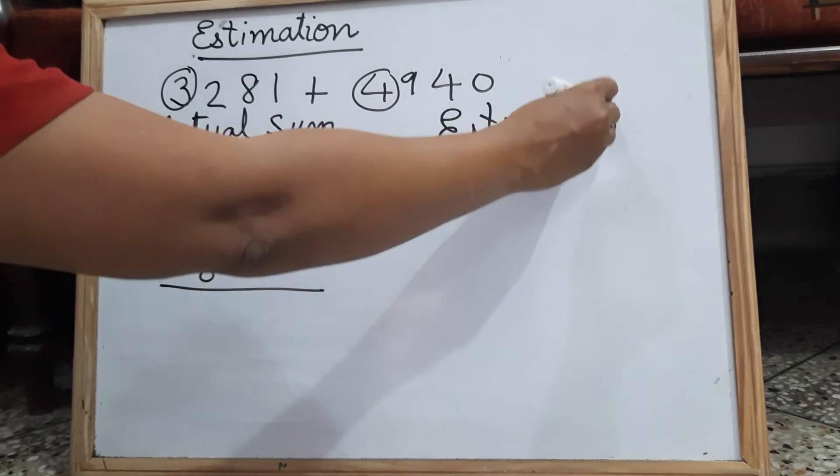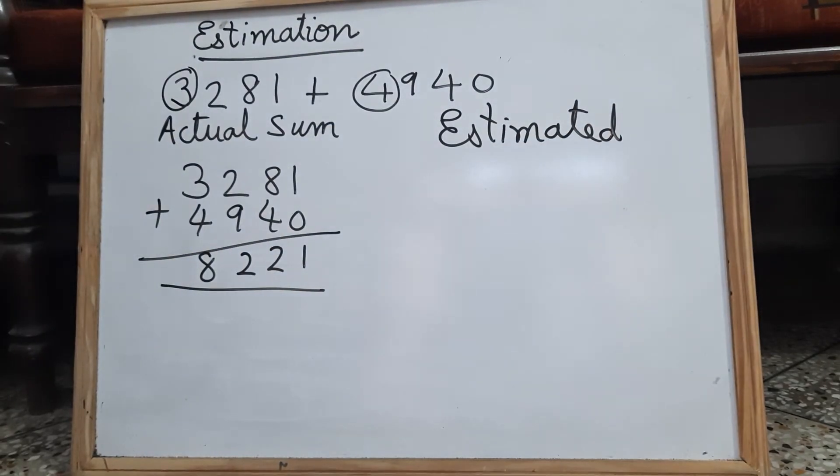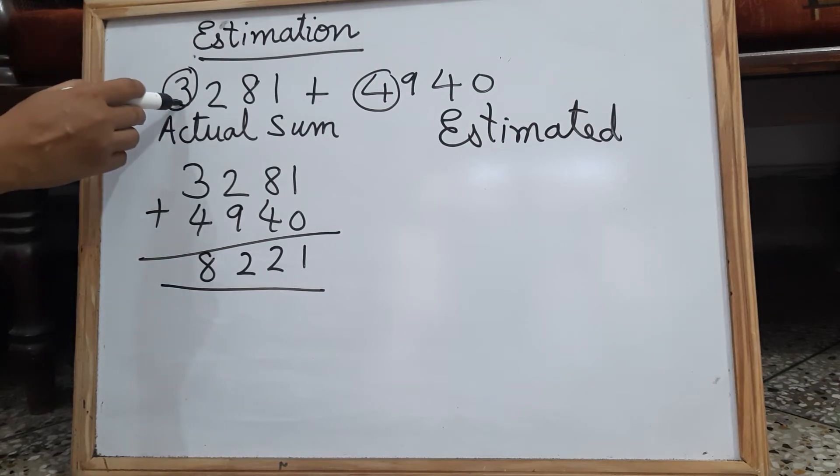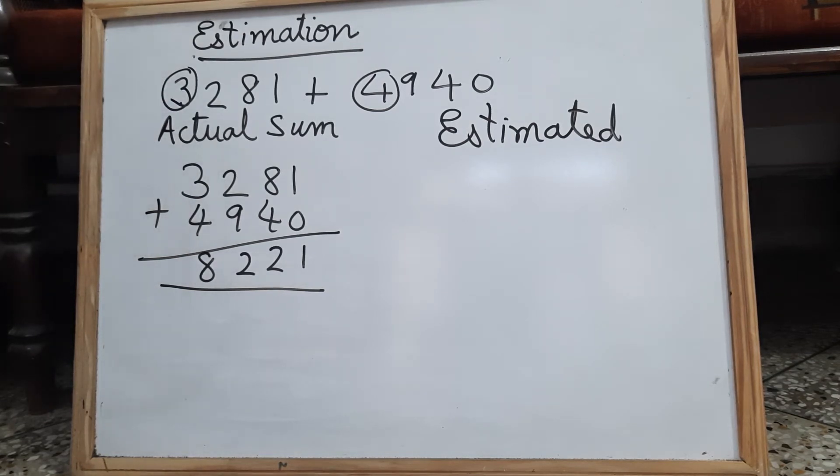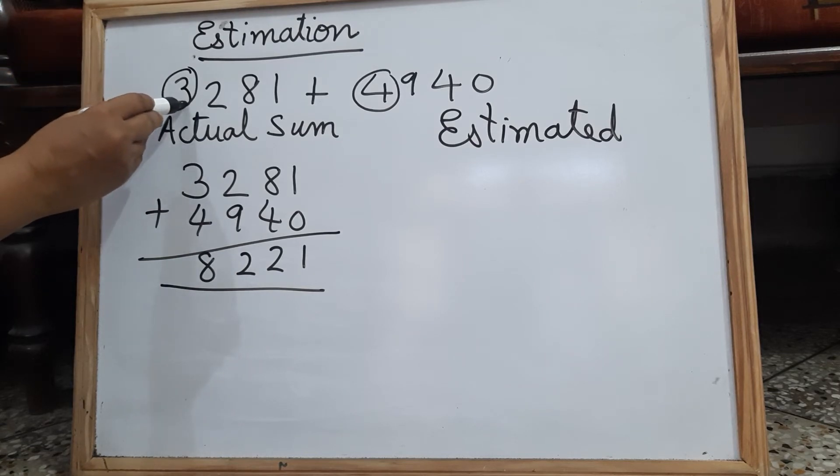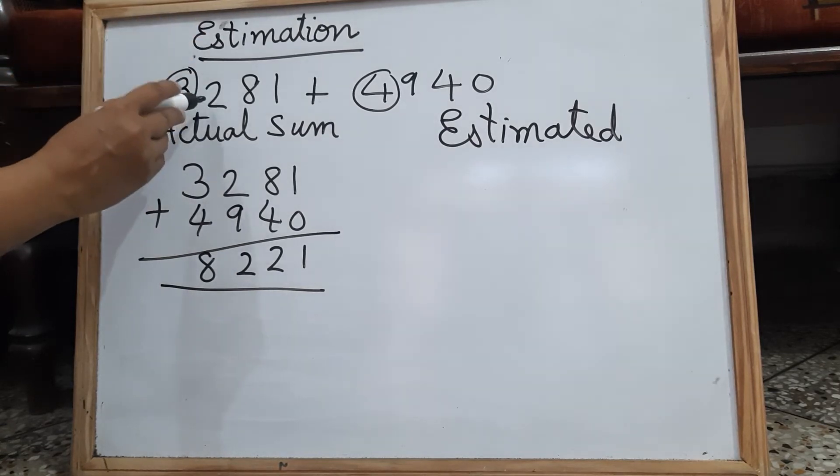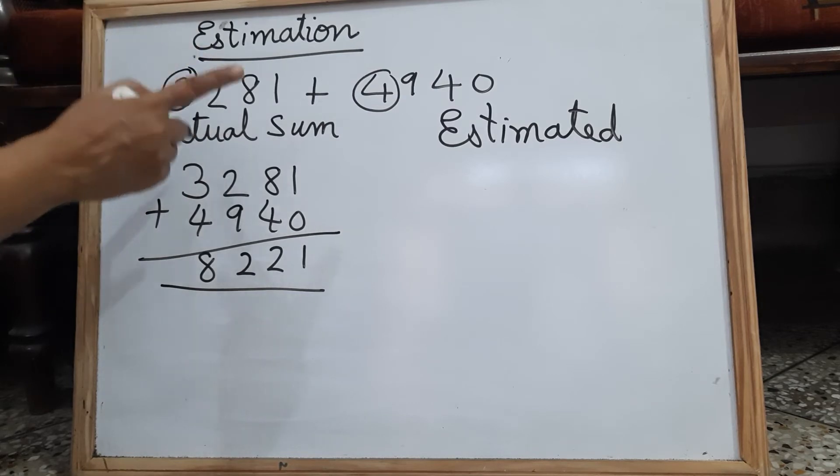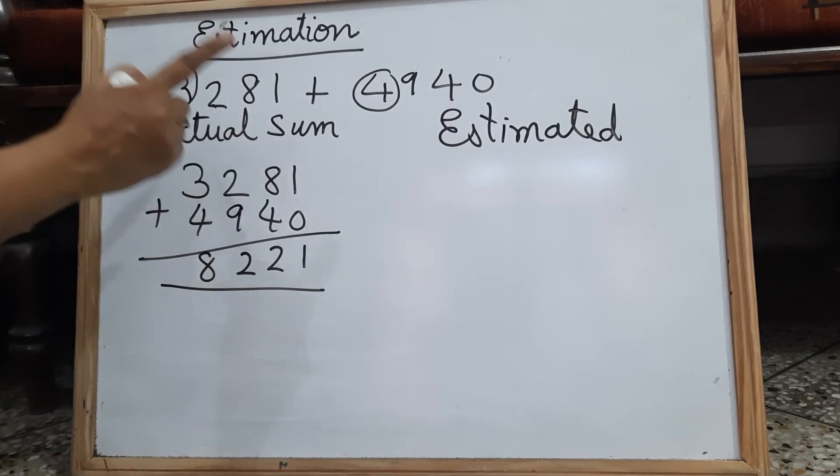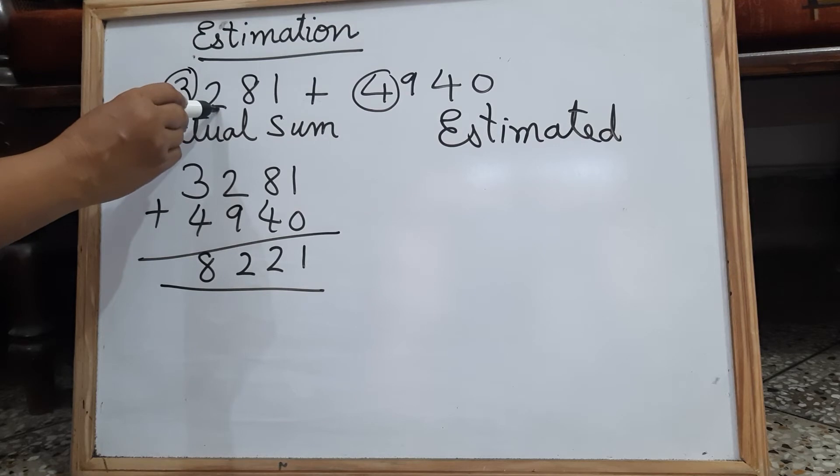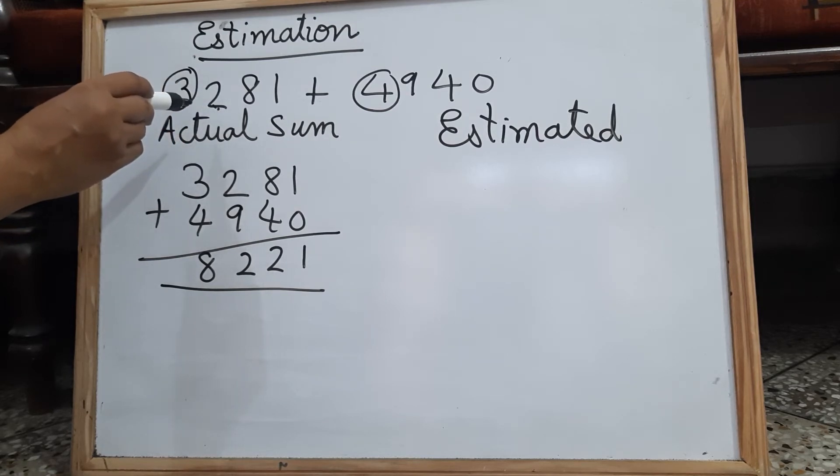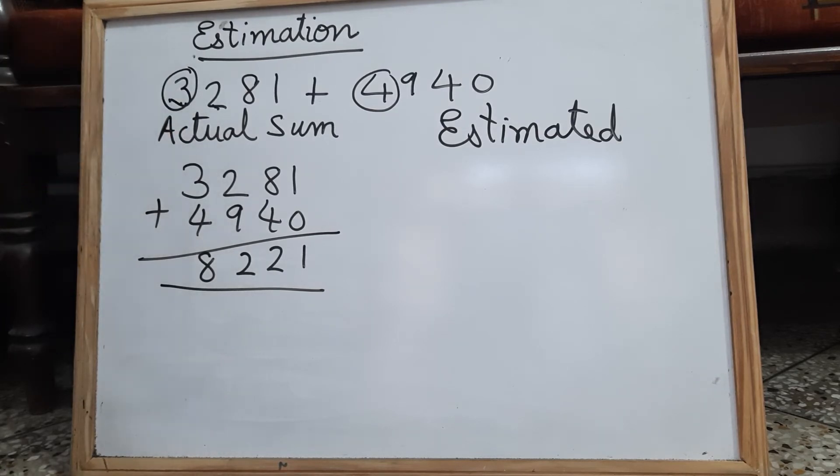Coming to the estimated sum, children you have to estimate first to the nearest 1,000. So what is the rule I have told you? Do you remember? This is the required place, so you have to consider the next digit to the right side. If it is less than 5, no change in the required place. If it is more than 5 or equal to 5, plus 1 in the required place.